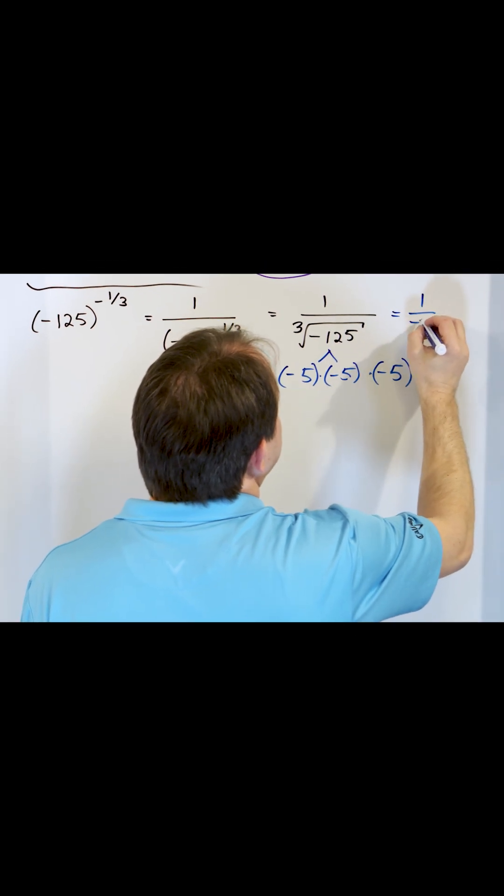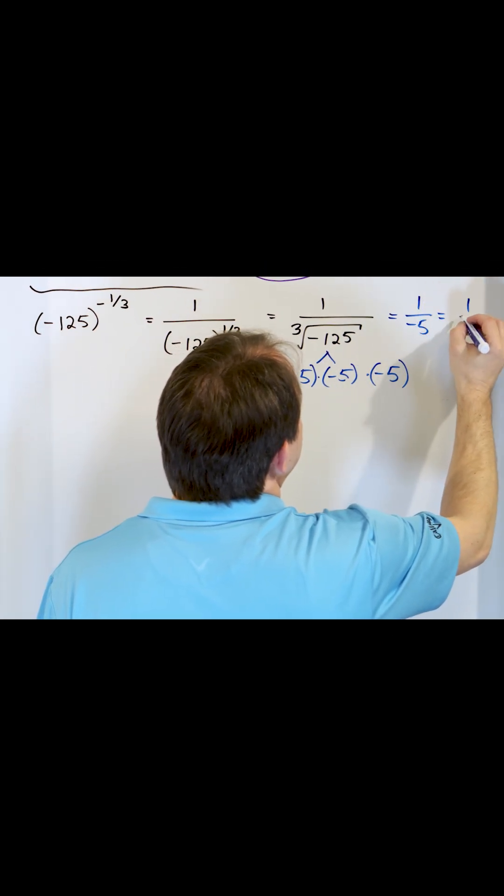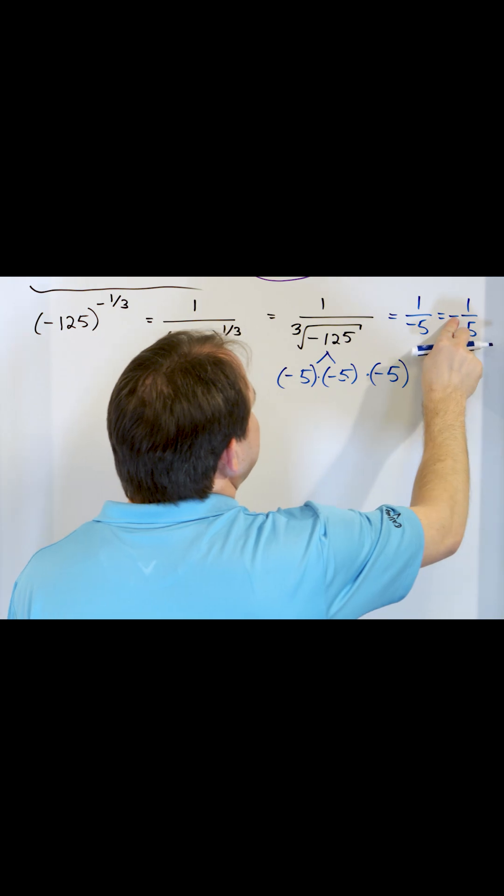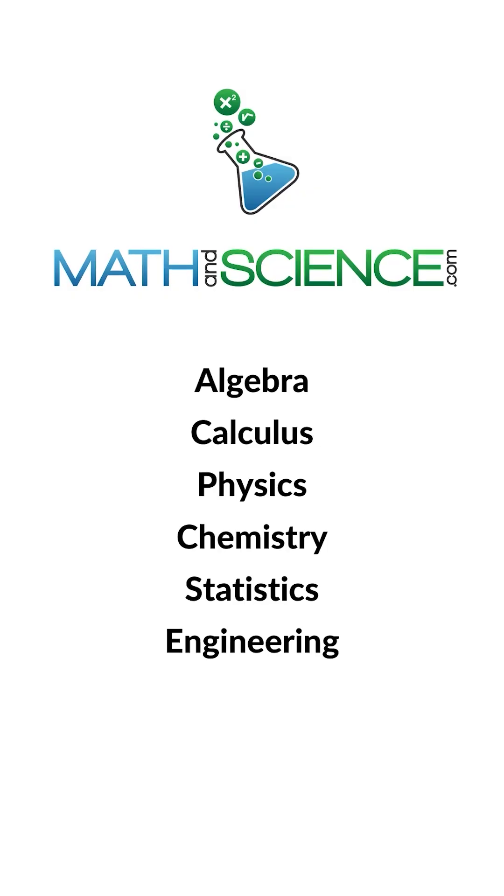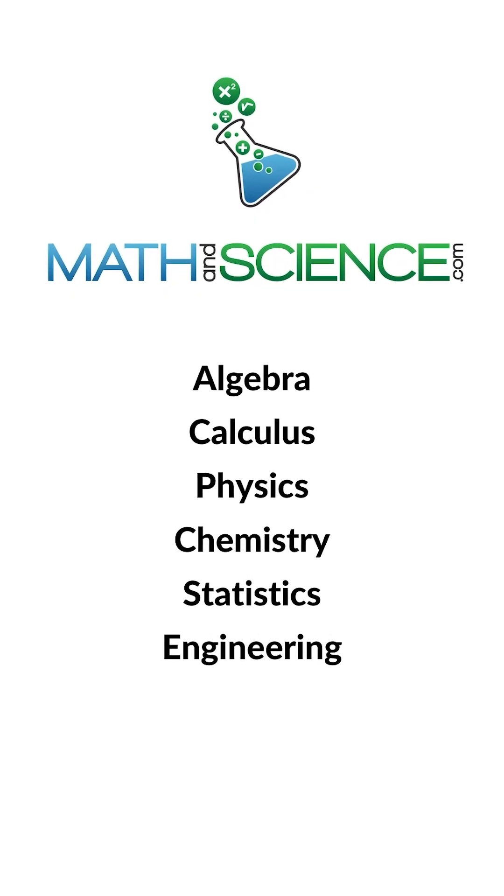And so what you're going to get is 1 over negative 5, or if you want to be better about it, write it as negative one-fifth with the negative sign sitting out in the front there. Learn anything at mathandscience.com.